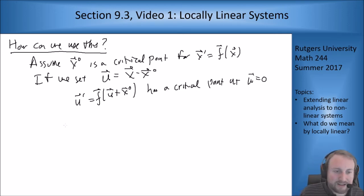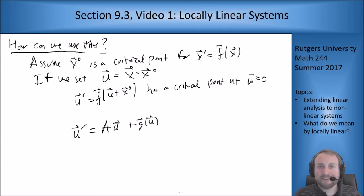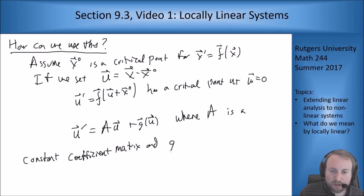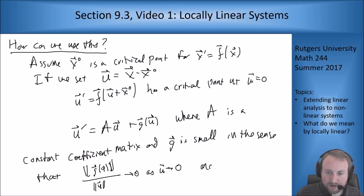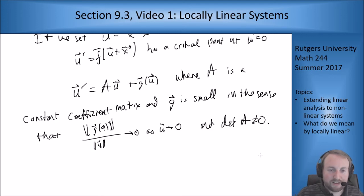Now the assumption we need to make here is that in this case our equation turns into u prime is Au plus some function g of u, where A is some constant coefficient matrix and g is small in the sense that the size of g of u in terms of vector norm over the size of u goes to zero as u goes to zero. So somehow like a second order term and determinant of A is non-zero. So there's a lot of assumptions here and if we can do this we call this system locally linear.